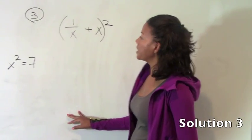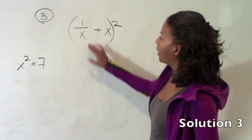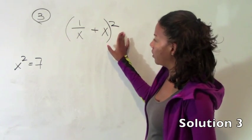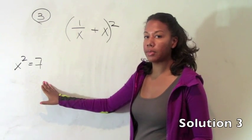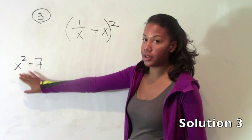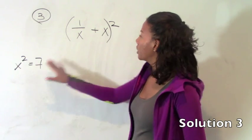Okay, number 3 asks us for the value of 1 over x plus x, that quantity squared, if x squared equals 7. So one clue here is that they tell us what x squared equals, not what x equals.